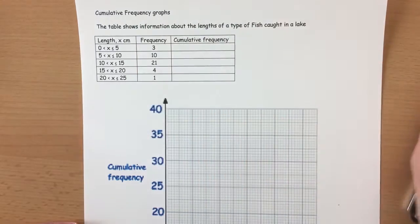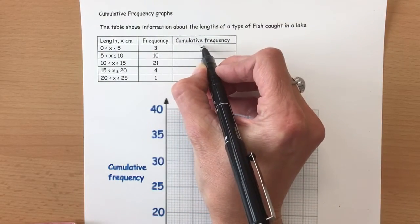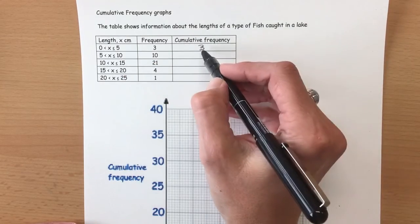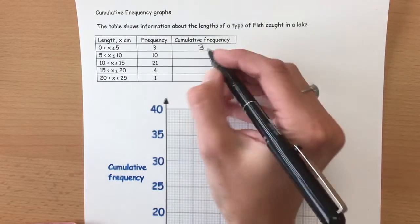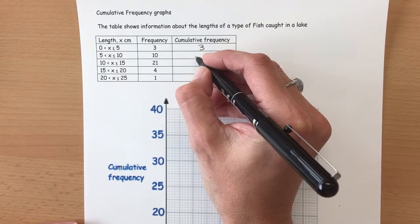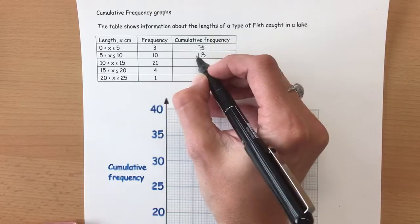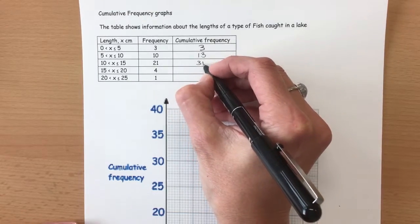In the first row there are three fish. When you get down to ten, when we accumulate the frequency we add the three and the next row together which gives us 13. Then we go to the next row and we add on the 21 onto the 13 and we get 34.